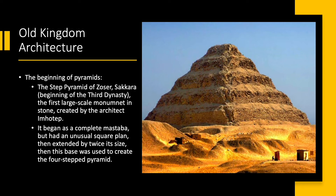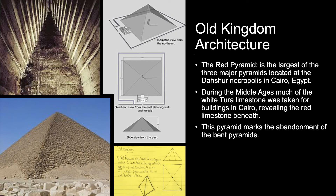Very little is known of Imhotep as a historical figure, but in the 3,000 years following his death he was gradually glorified and then deified. The Step Pyramid began as a complete mastaba but had an unusual square plan. As time moved on, it was extended to twice its size, and then this base was used to create a four-step pyramid, with further tiers added on top. It was therefore an accretion — a developmental addition rather than a single planned design.